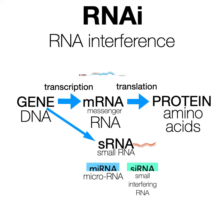siRNA comes from outside, or what we call exogenous sources. Insects, plants, and other invertebrates use siRNA as an antiviral defense mechanism. But we have evolved more complex immune systems, so our RNAi machinery uses microRNA most of the time. However, if we introduce siRNA in the lab as an experimental tool to knock down the amounts of various proteins made, or even use it therapeutically — there are a couple of therapies like that — we can use siRNA, because siRNA and microRNA use the same pathway for most of it.